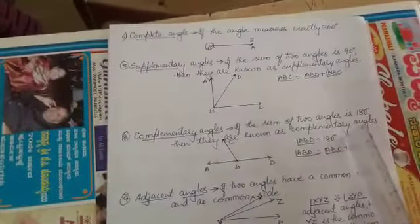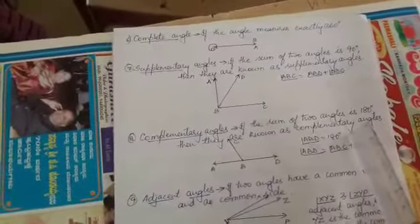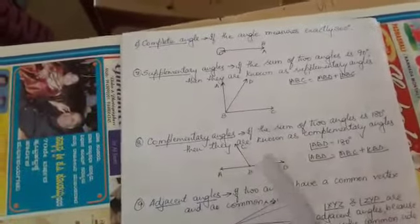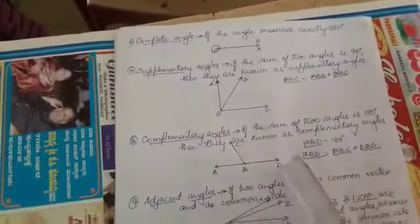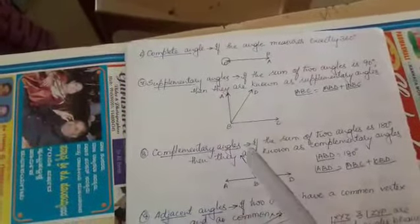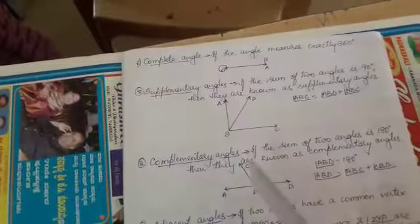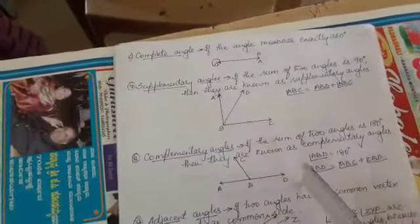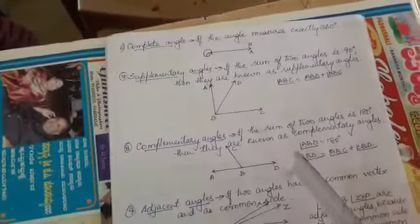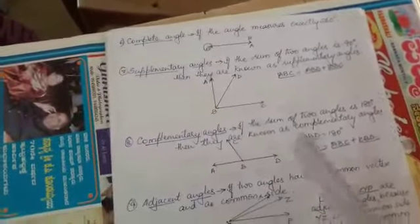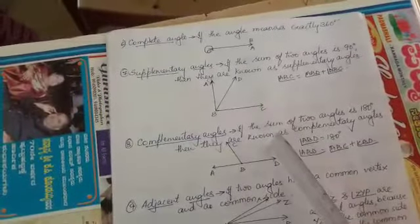Same way we have complementary angles. That is the sum of two angles should be equal to 180 degrees. Here ABD is a straight line and BC is a ray drawn on AD. So when I add angle ABC and angle CBD it should be equal to 180 degrees. Such angles are called complementary angles.